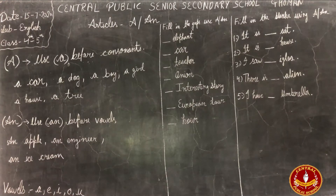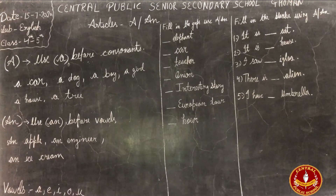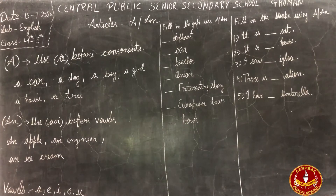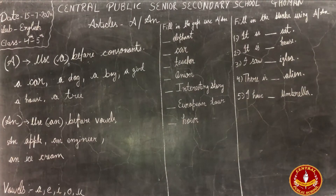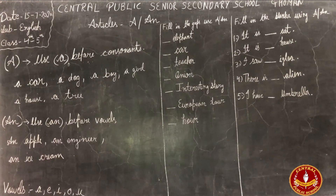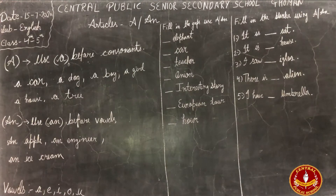We only use 'a' and 'an' with singular countable nouns. Words like dog, boy, girl, house, tree are all countable nouns — we can count them. But if they become plural or uncountable, then we do not use 'a' or 'an'.